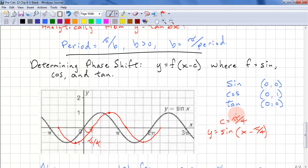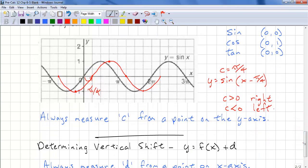Remember, if c is positive, we're moving to the right. If c is negative, we're moving to the left. We always measure c from a point on the y-axis of the original function.